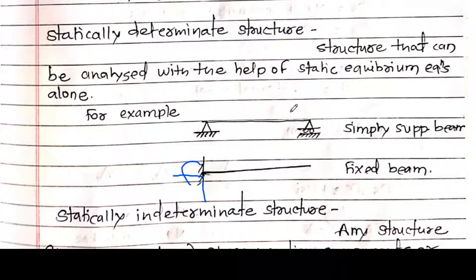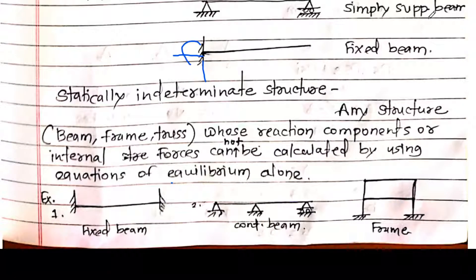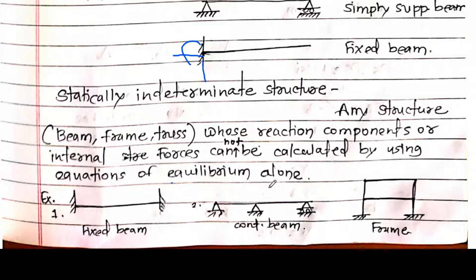When the number of equations available and the number of unknowns are the same, the structure is determinate. A structure that can be analyzed with the help of static equilibrium equations alone is a statically determinate structure — for example, simply supported beam and cantilever beam. Any structure whose reaction components or internal forces cannot be calculated using equations of equilibrium alone is a statically indeterminate structure.